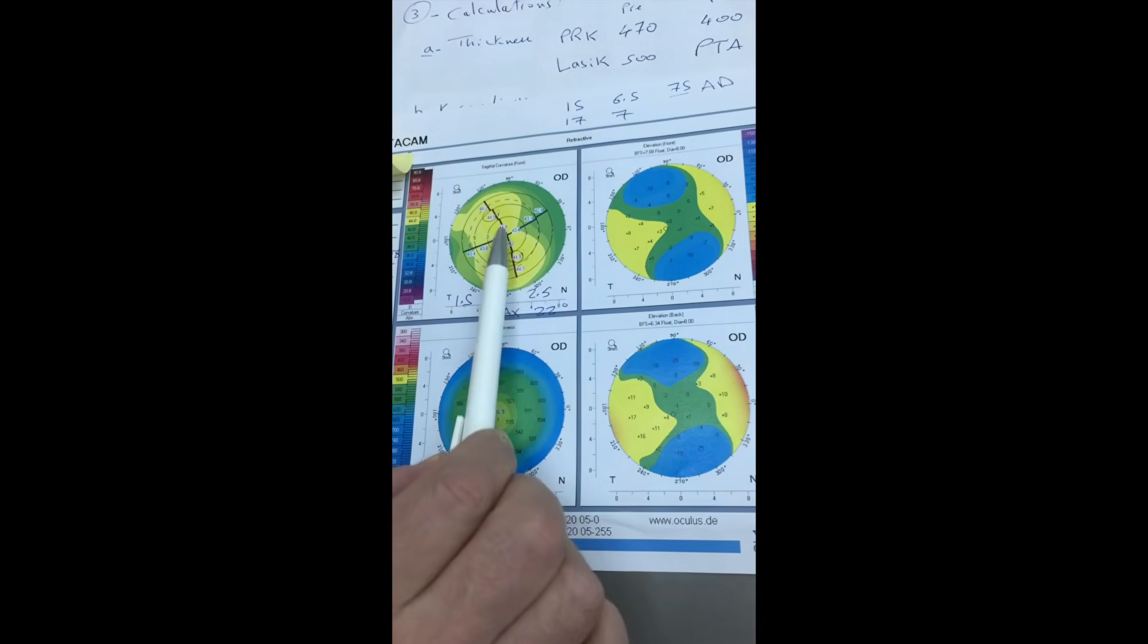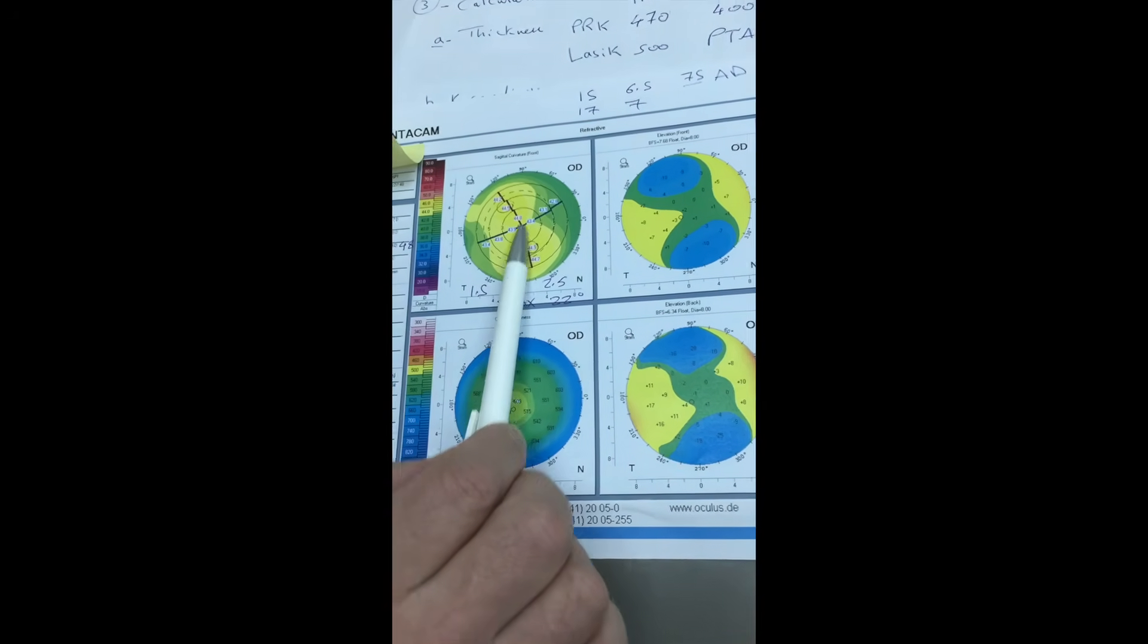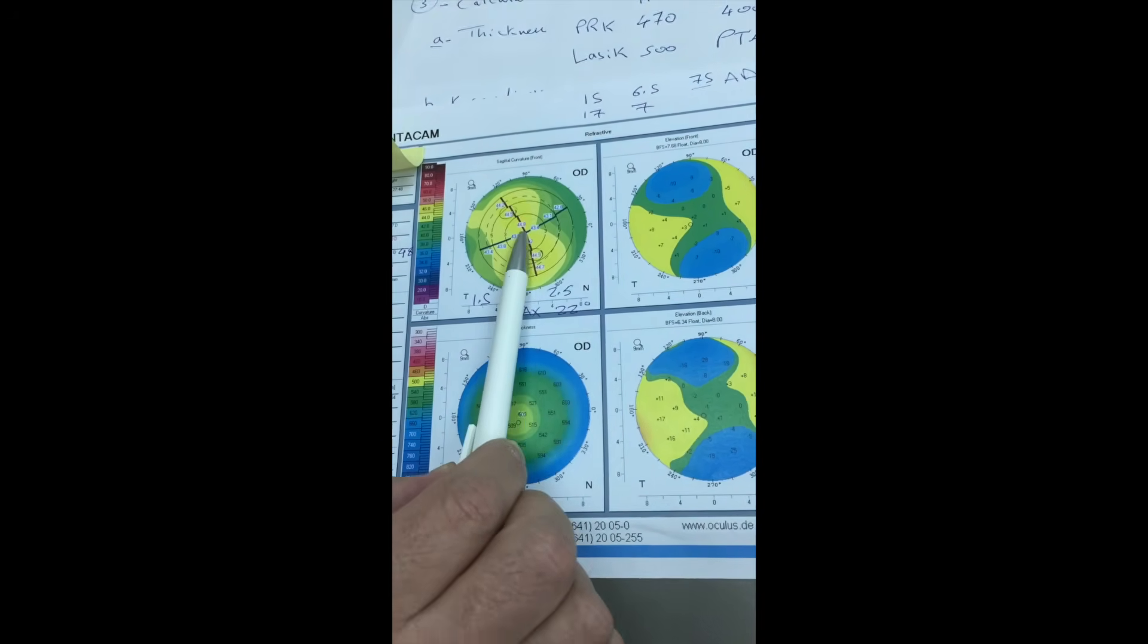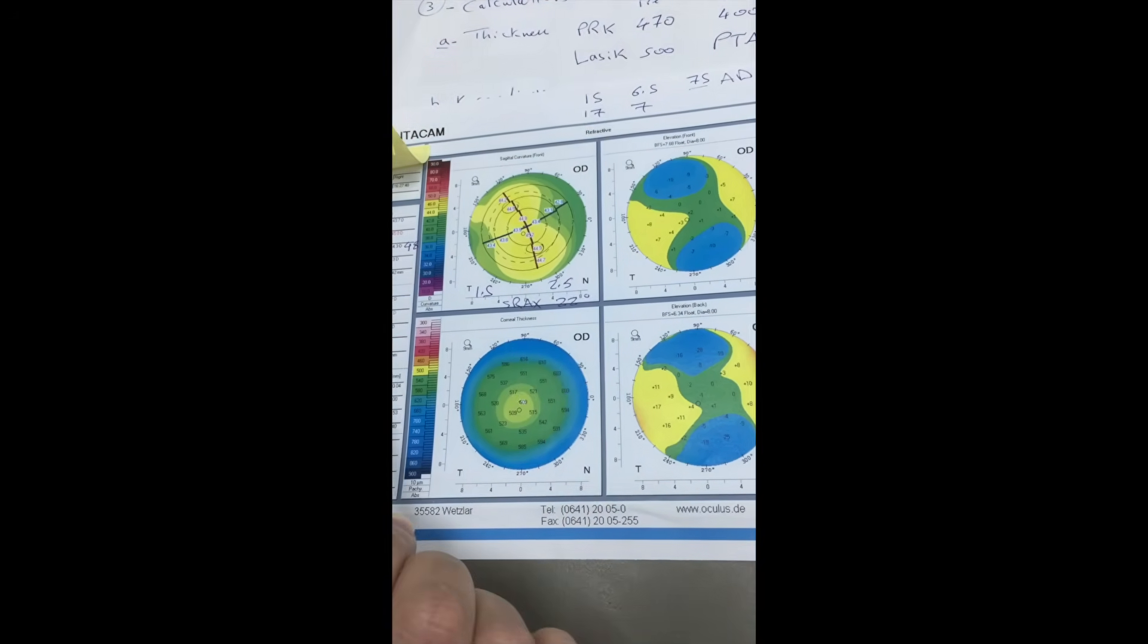The SRAX, which is the angulation between the segments in the inner circle. If the angle between the inferior and the superior is 22 degrees and more, then it is considered as abnormal.